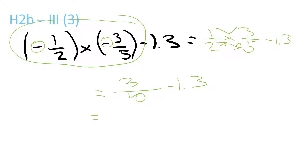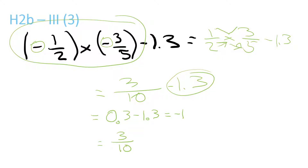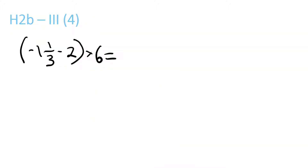There are two ways of working this out. 3/10 is the same as 0.3, minus 1.3 equals minus 1. Both of these give you the same answer, so the answer is minus 1.